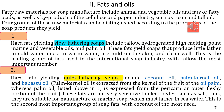Fatty raw materials are used for the manufacturing of soap. These include animals and vegetable oils and fats, fatty acids, as well as by-products of the cellulose and paper industry such as rosin and tall oil. Four groups of these raw materials can be distinguished according to the properties of the soap products they yield.